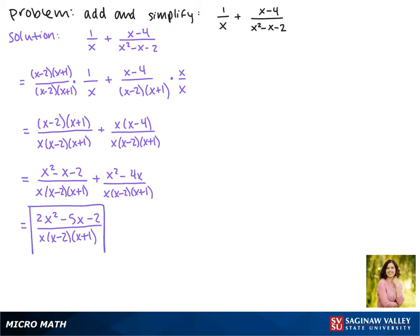So this is our final answer. The other way we can write our answer is by distributing in the denominator. We would FOIL out between (x - 2) and (x + 1), giving us x² - x - 2.